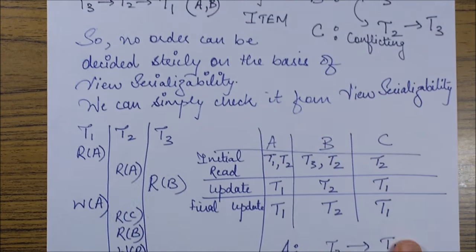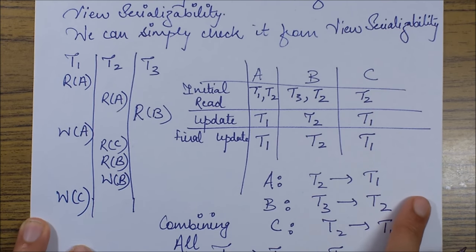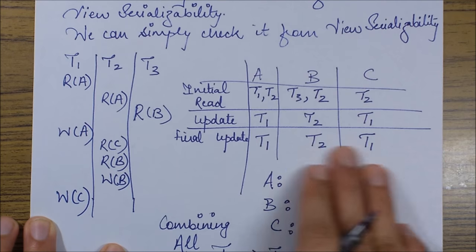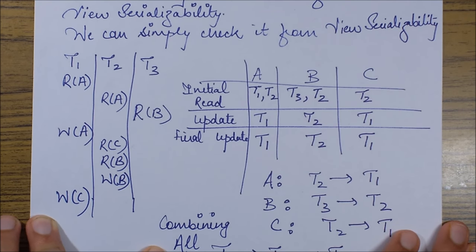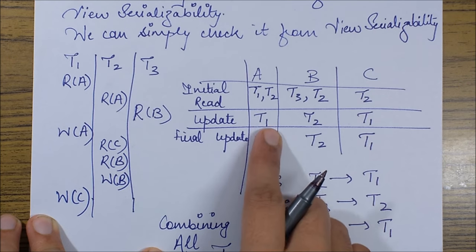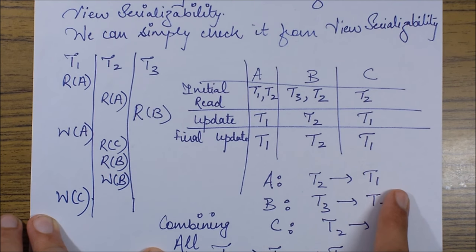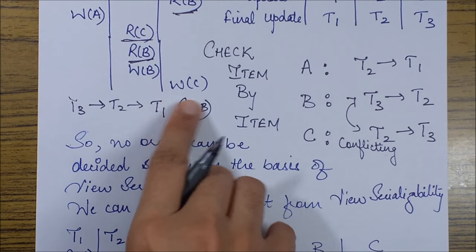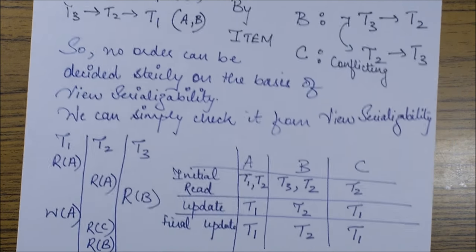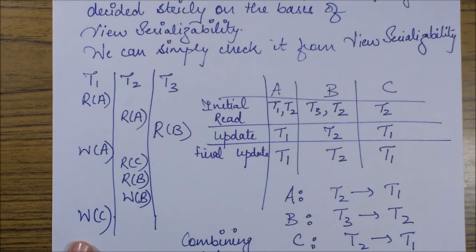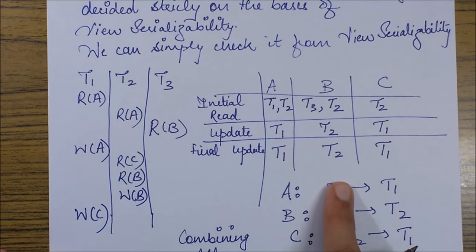Let's move on to the second example discussed in the previous session. In that schedule, the only change made was swapping the position of the Write C operation. The table has been plotted, and now we analyze the orders. For column A, the order is T2 before T1. The change only affected T3 and T1.